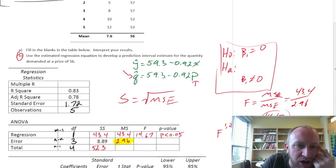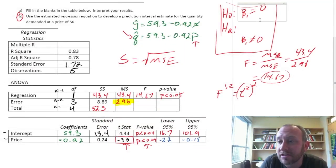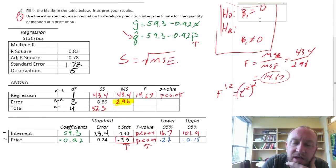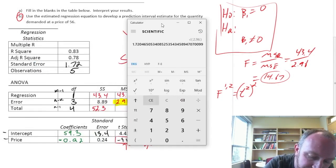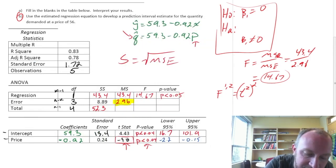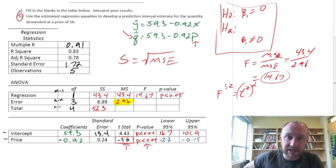that multiple R. This is often called the correlation coefficient. It gives us a measure of the strength of the linear correlation between our two variables. And it's quite simply just the square root of the R squared. So, if I take 0.83 and square root it, I find 0.91. So, fairly strong correlation.